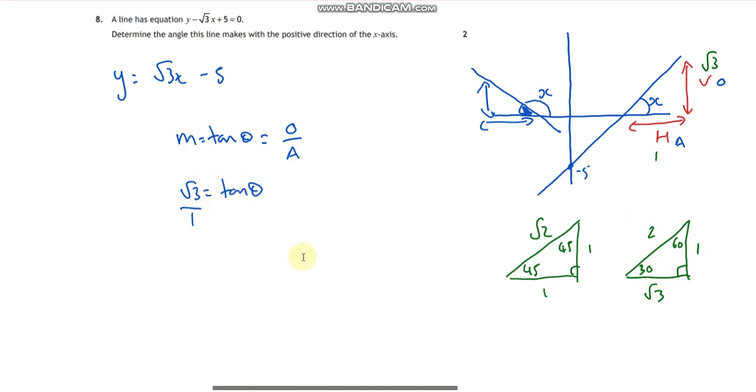So if I've got root 3 over 1, so root 3 is my opposite and 1 is the adjacent, that means I must be looking at this angle here of 60 degrees. So if I was to do inverse tan of root 3 over 1, I would end up with 60 degrees. And yeah, this is simple, not a bad question for two marks.